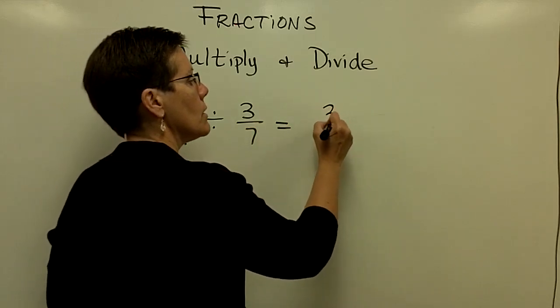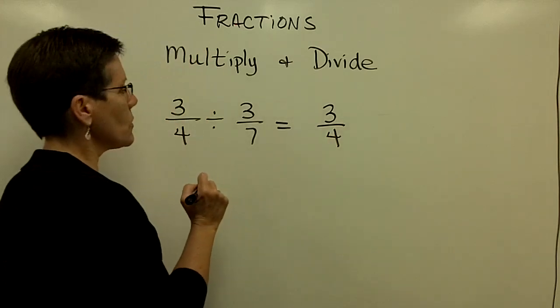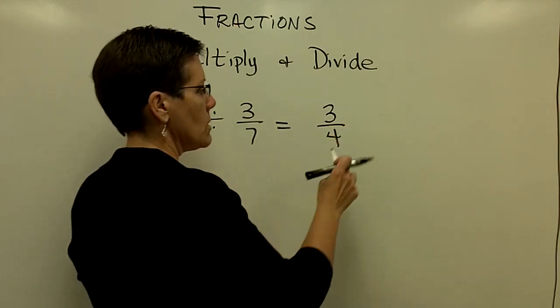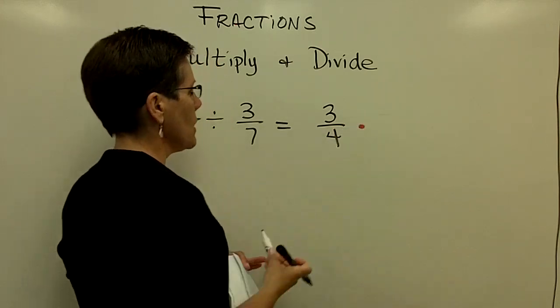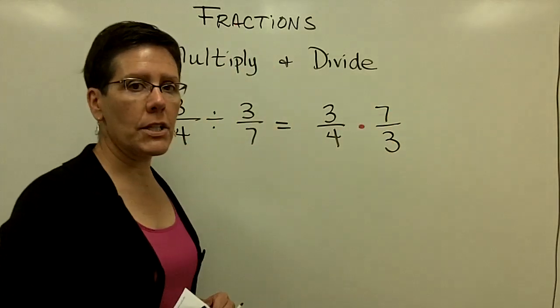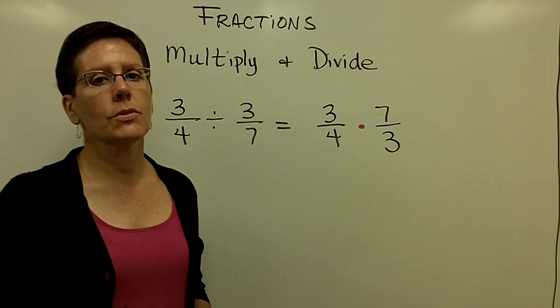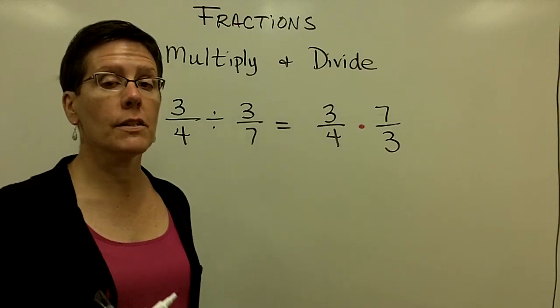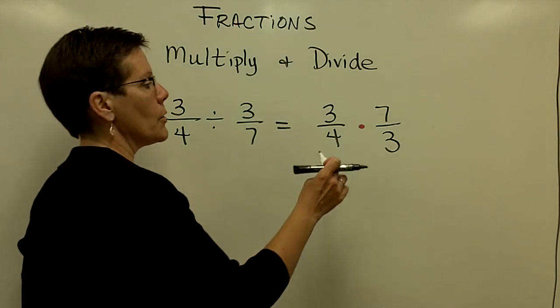So again, you take your first fraction, three fourths, and you multiply by the reciprocal of the second fraction. And now you go back to reducing. In the event that there's a common factor in the top and on the bottom of those fractions,